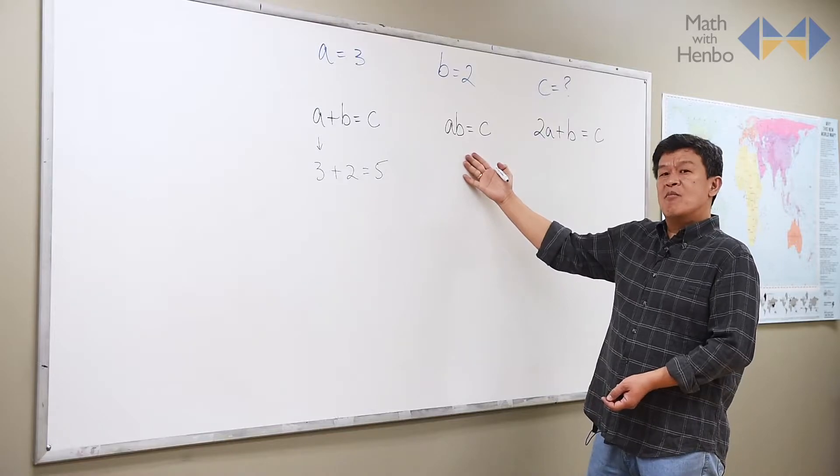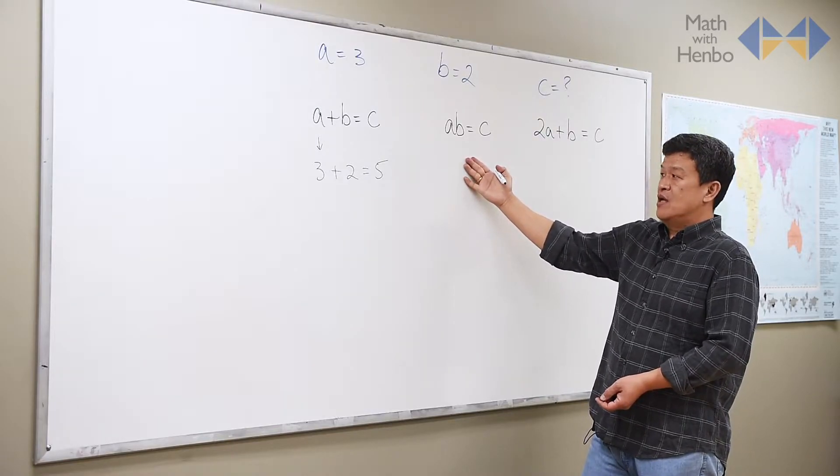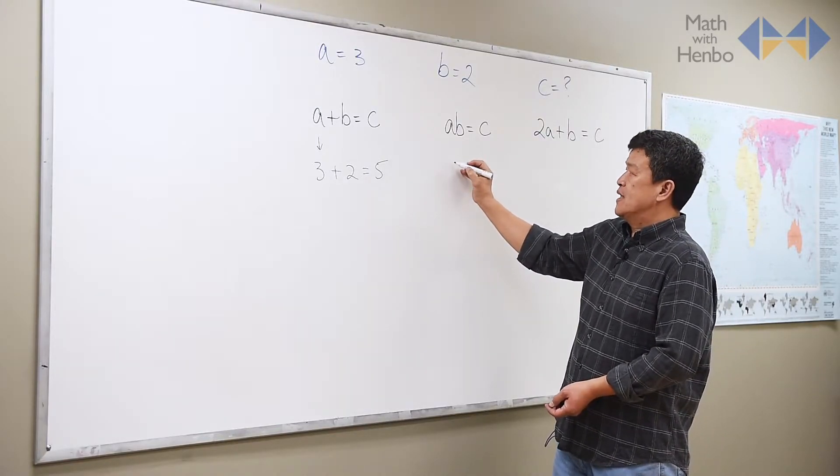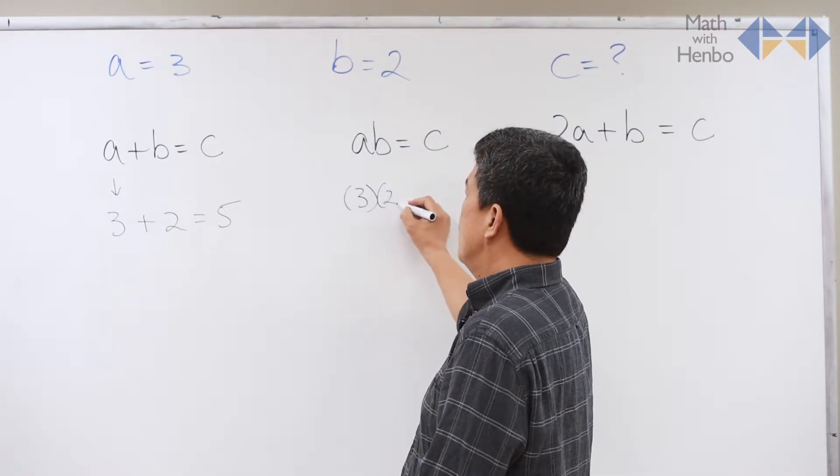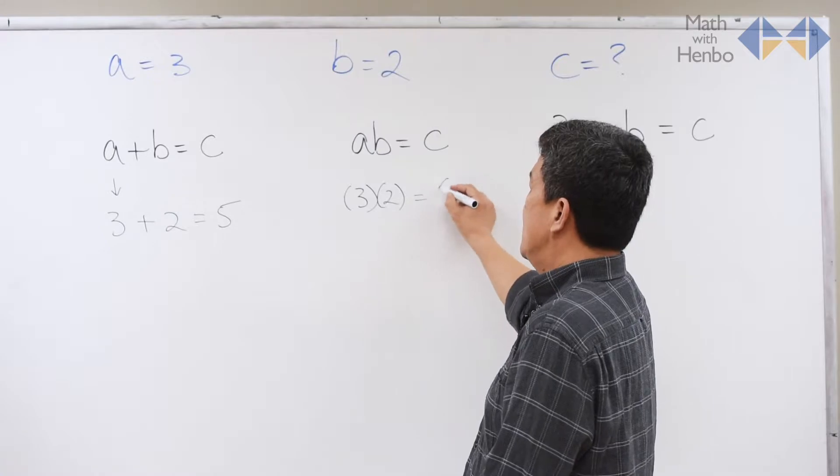For the second kind where we multiply a times b, the answer is going to be different, but numbers we're substituting are exactly the same, 3 and 2. Here, the answer is 6.